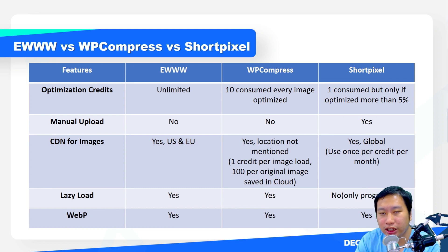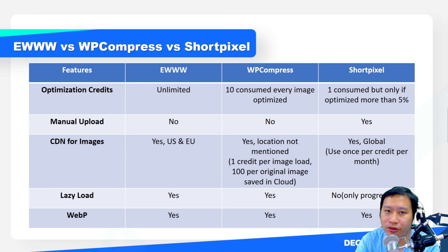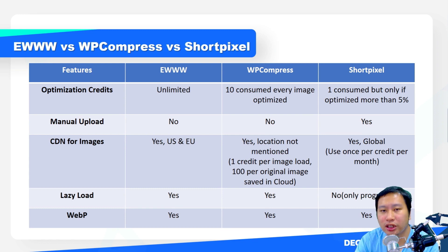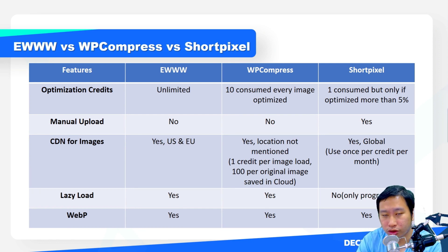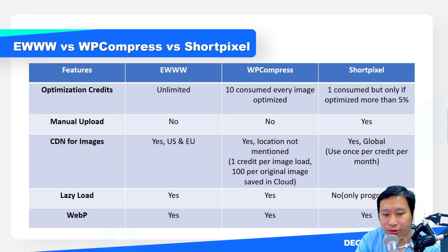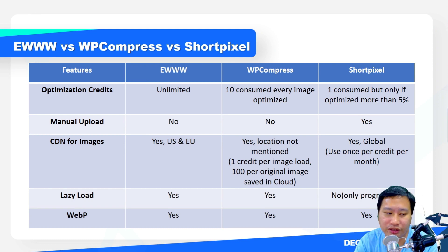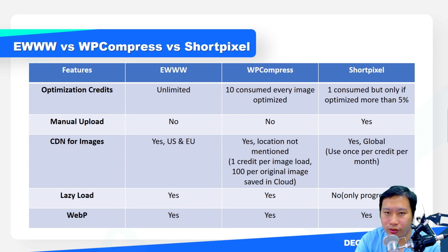For lazy loading, Ewww and WP Compress both provide lazy loading for images. Short Pixel, however, does not — it only offers progressive image loading, which means all images do load on your website, but for larger images they will appear later in a progressive manner.